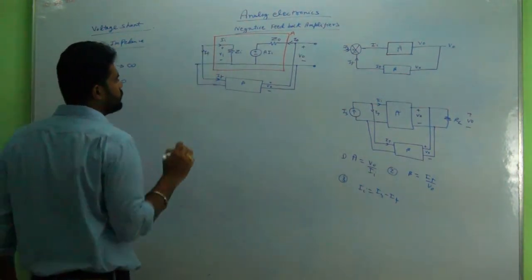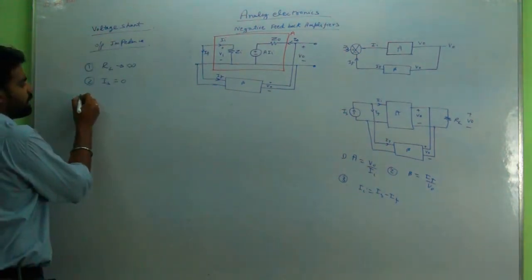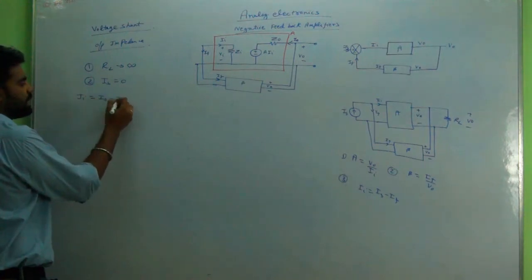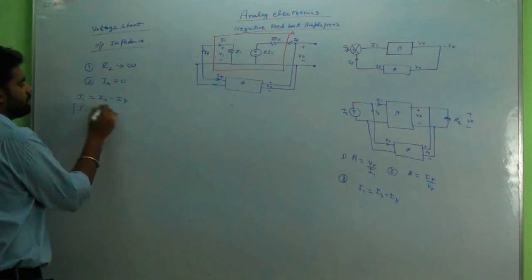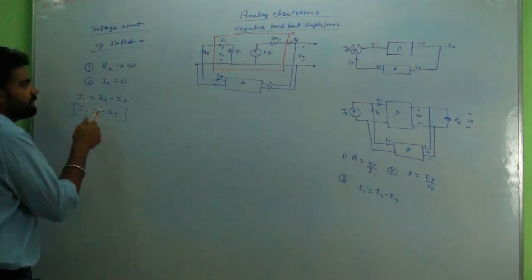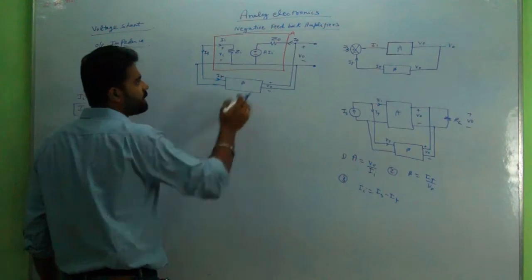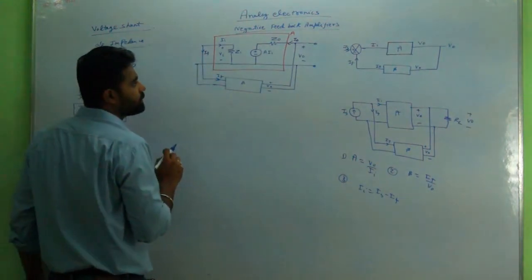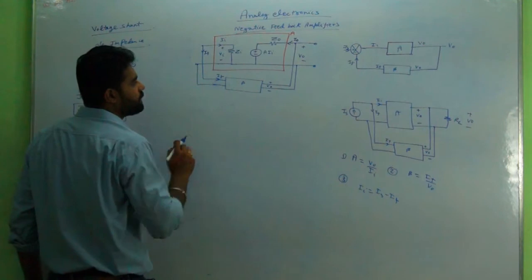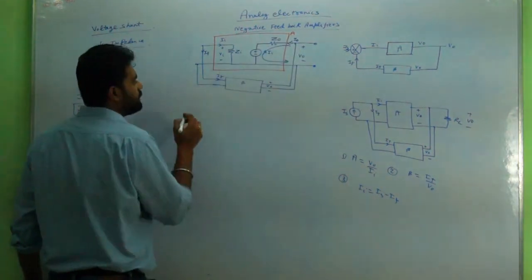With IS = 0, two things will be affected. First, II = IS − IF will become II = −IF. Second, since RL is infinity, I_naught is the current that is available at the output. We'll now write KVL at the output.